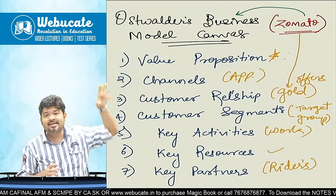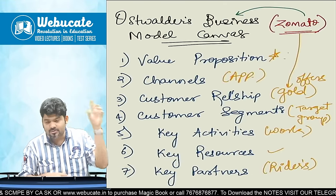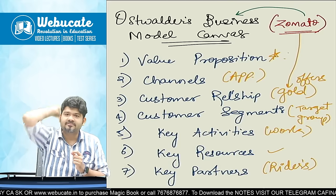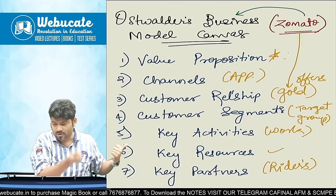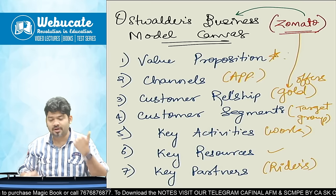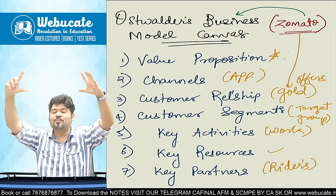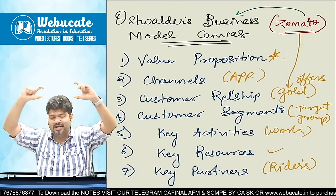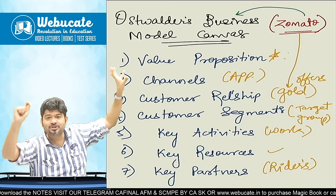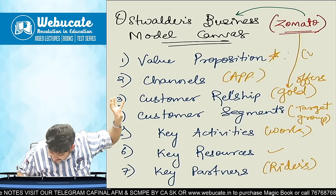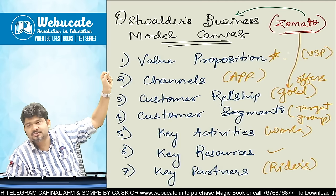Jab aapke yeh all nine key activities are defined, aur jab yeh internally ek saath work out karte hain, that is where your business will start to succeed. Ek bhi cheez undefined hai, ya if it is not functioning properly, will affect the whole canvas. Toh kya yeh nine activities yaad rahenge? Yaad rakhna hai — Zomato ka sabse pehla cheez ya koi bhi business ko start karna hai, uska pehla cheez is going to be value proposition. What is the value proposition — unique selling proposition, jisko apan bolte hain USP kya hai tere business ka.